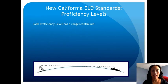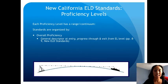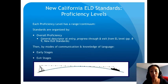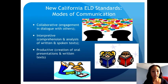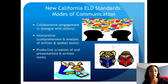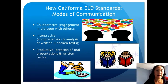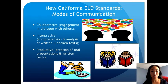Each ELD proficiency level has a range or continuum from entry to exit. The standards are organized by overall proficiency — with general descriptors at the entry, progress-through, and exit levels — and by modes of communication and knowledge of language. There are three modes of communication: collaborative, interpretive, and productive. Collaborative is engagement in dialogue with others — exchanging information and ideas, interacting via print and multimedia, and persuasion. Interpretive is the comprehension and analysis of written and spoken text. Productive is the creation of oral presentations and written text.